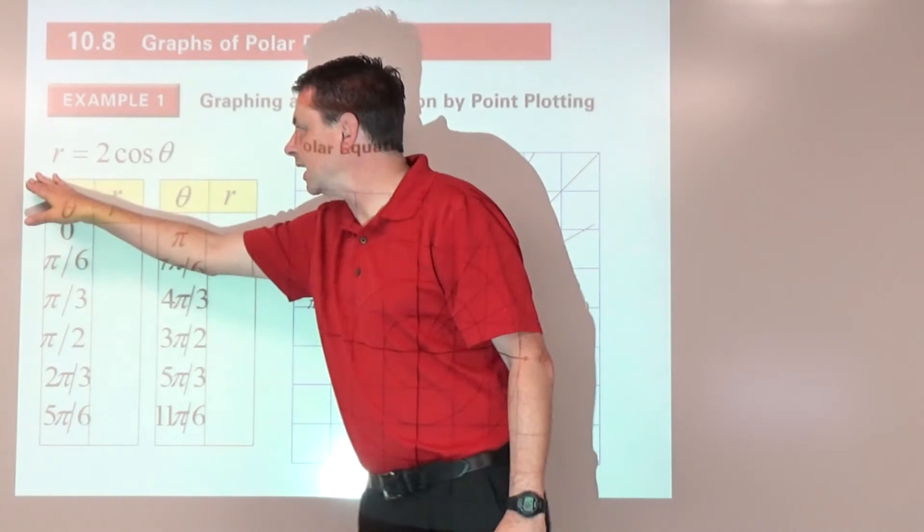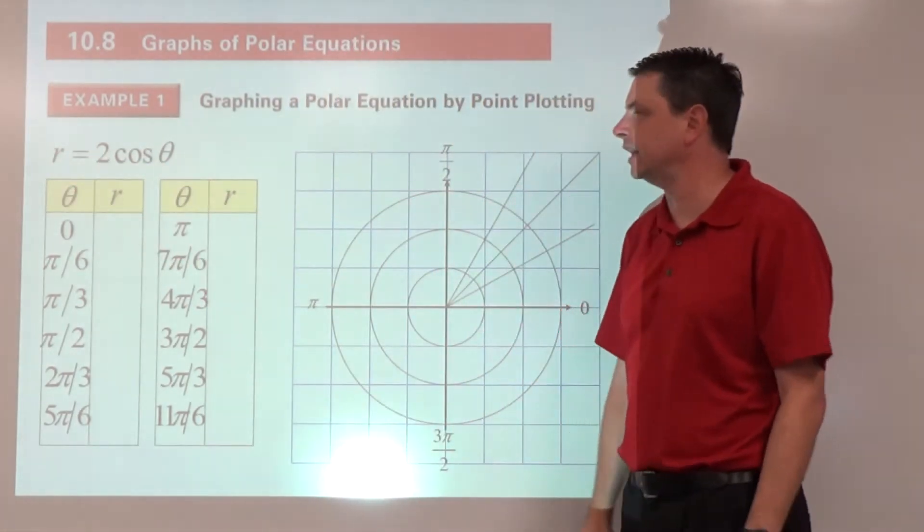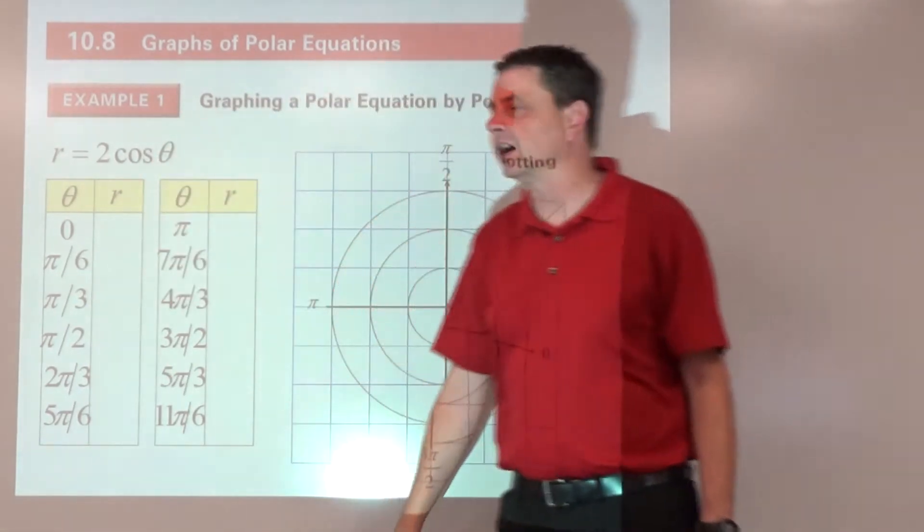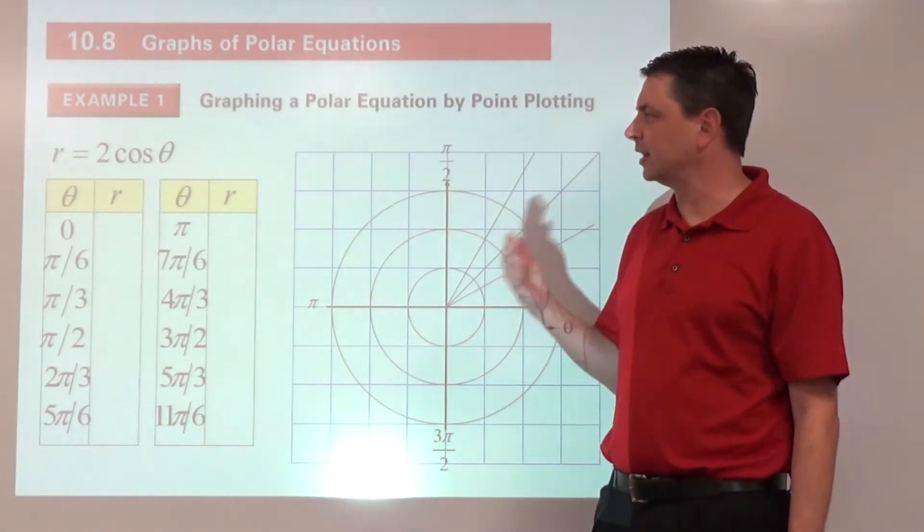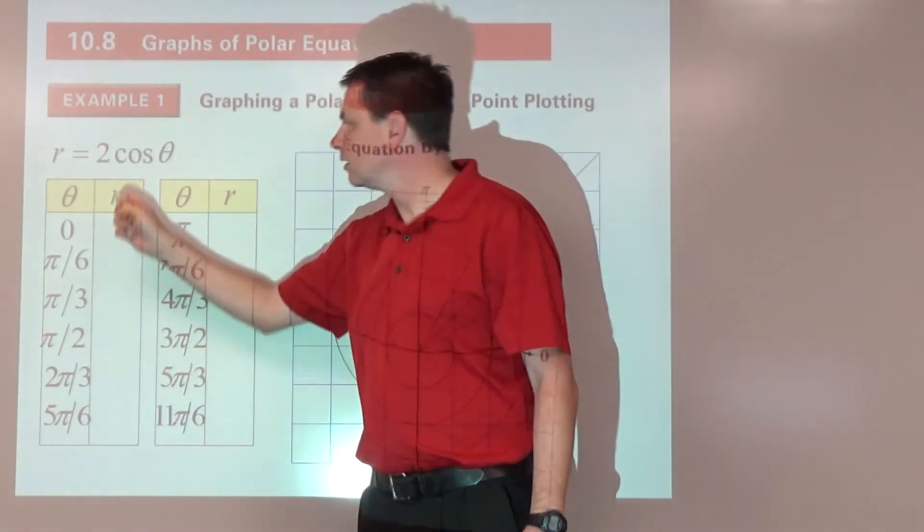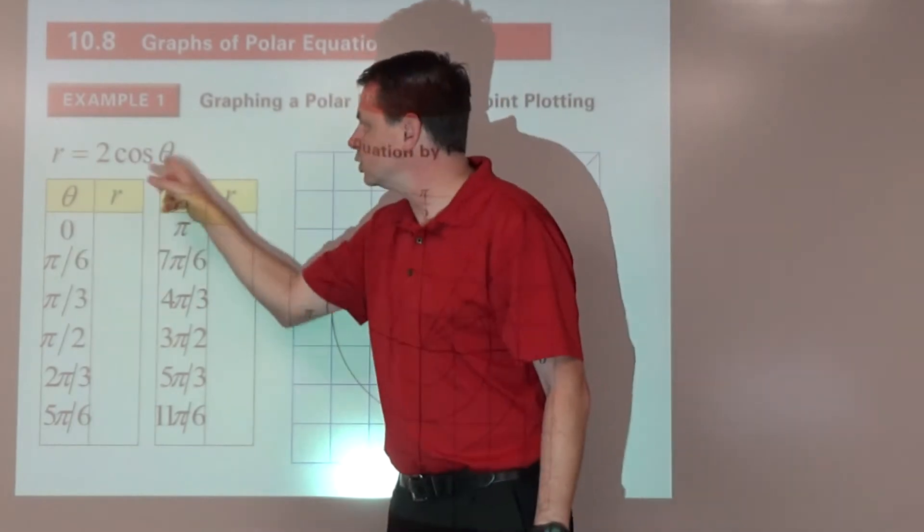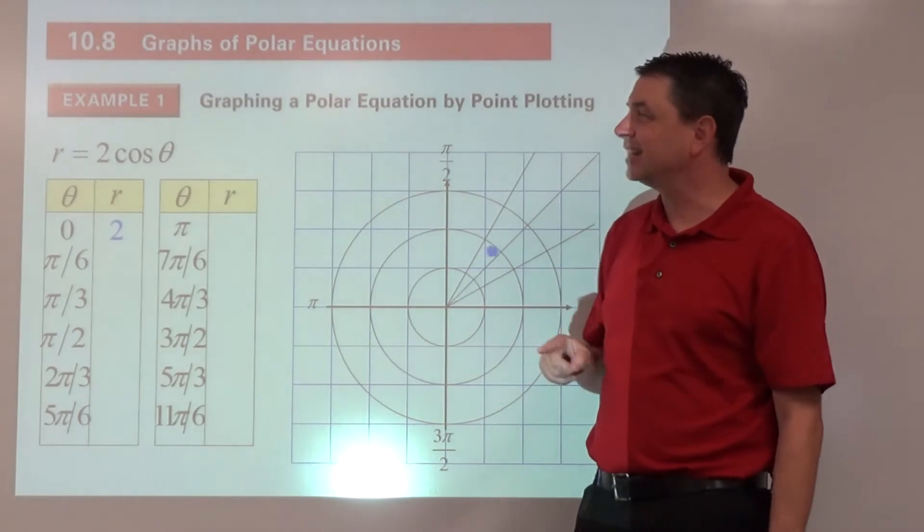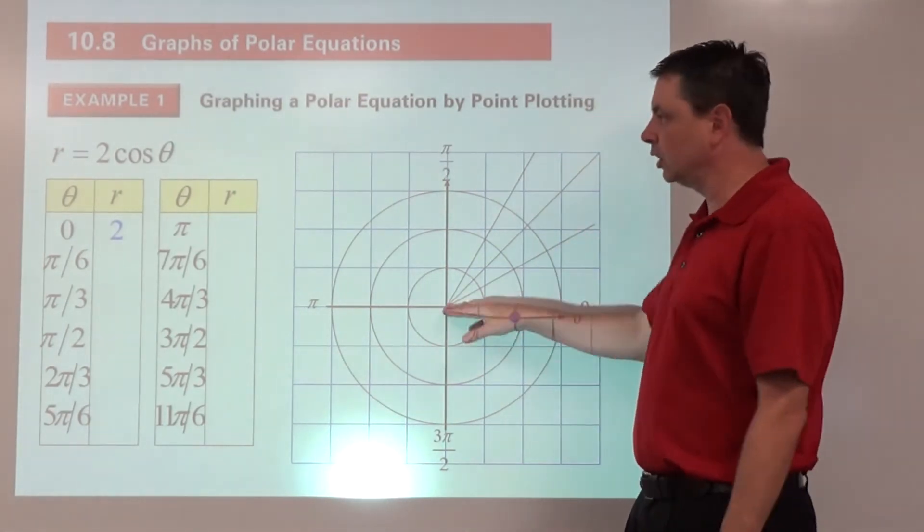This is lesson 10.8, Graphs of Polar Equations. We're going to take a look at a polar equation r equals 2 times the cosine of theta. Since we don't really know what we're doing here, it's always a good idea to do a table of values. Remember our polar coordinates are r and the cosine of theta, so we'll substitute at 0 first. Cosine of 0 is 1 times 2 is 2.